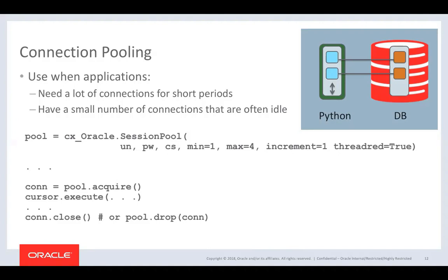If you do pool.drop on a connection, that blue dot disappears from the pool. You might do that in rare cases if you think the connection is misbehaving or has complex session state you don't want reused. The pool is a reusable resource that grows and shrinks on demand. Here the pool is configured with a minimum of one and a maximum of four connections.